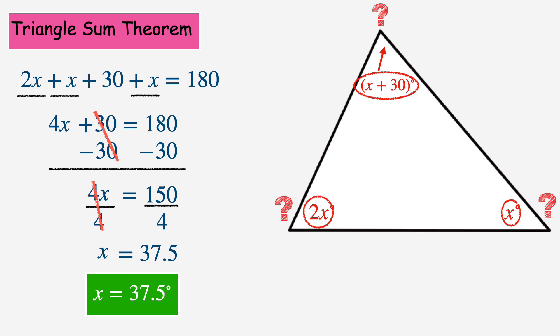The last step here is to substitute this 37.5 into each of these three expressions. I'll start with 2x. Using substitution, I have 2 times 37.5, which equals 75, or 75 degrees. For the top angle, the expression after using substitution is 37.5 plus 30, and that equals 67.5 degrees.